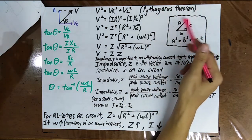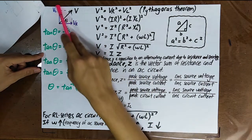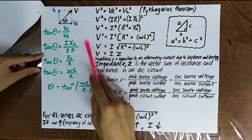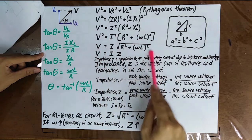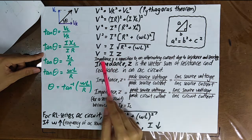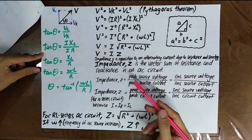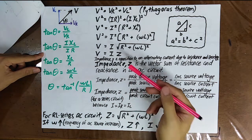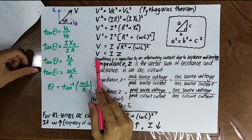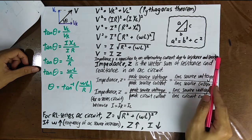By Pythagoras' theorem, V² = VR² + VL². Since VR = IR and VL = IXL, you can derive V = IZ, where Z is the impedance. The impedance Z is defined as the opposition to an alternating current due to resistance and reactance.